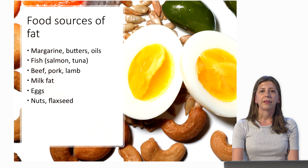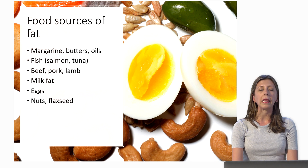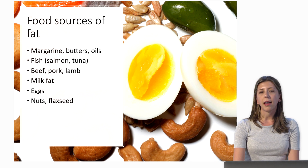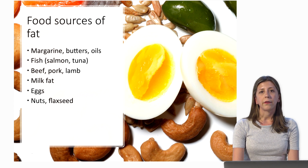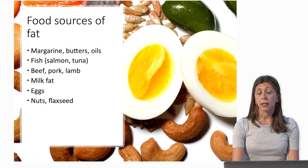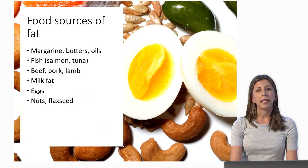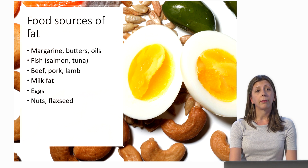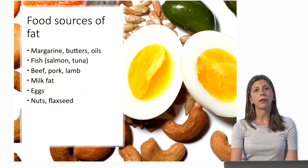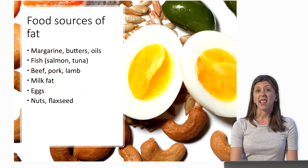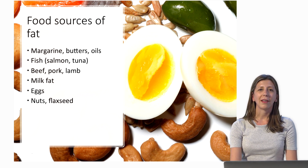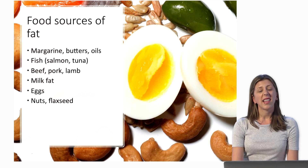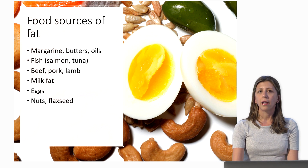Food sources of fat are also pretty abundant. Fat comes from butter, any kind of oils, and margarine. Salmon and tuna contain fat — you can notice salmon is oily. Any type of meat — beef, pork, and lamb — contains fat. Milk, especially whole milk, definitely contains fat. Eggs contain fat, particularly in the egg yolk, which is where all the fat lies. Nuts and flaxseed are also sources. This is a broad list but covers the main ones.